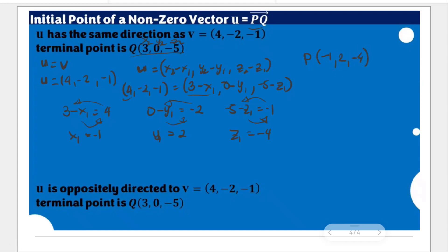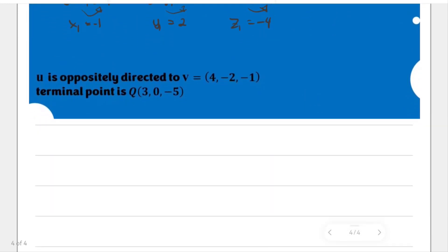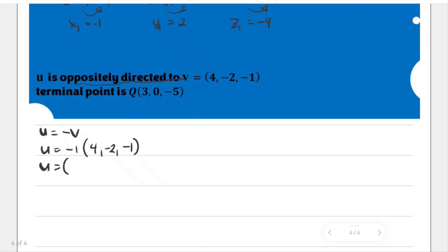This is the same process for the next item, but it should be noted that for the next situation, vector u is oppositely directed to v. When we say oppositely directed, vector u equals the negative of vector v. This means the components of vector u are the negatives of v's components (4, negative 2, negative 1), so vector u has components negative 4, positive 2, and positive 1.